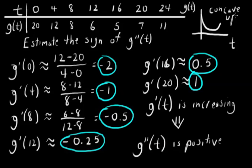And as you read in the text, if you know something is concave up, then you know it has a positive second derivative. And that's how you can estimate the sign of a second derivative from the table of data.